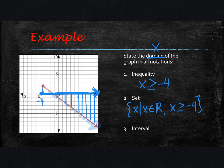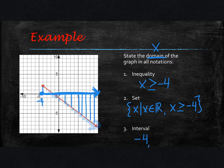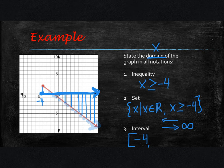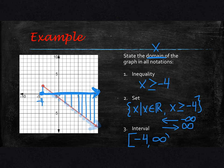Interval notation is the easiest one. You look at the smallest value, which is negative 4, and since it has a solid point, that's going to be a bracket. On the right side of my graph it goes on forever — so what value do we use? It's going to be positive infinity, since it's moving to the right. If it had an arrow on the left side, that would be negative infinity. Since it goes right, we use positive infinity, and with infinity you always use parentheses.